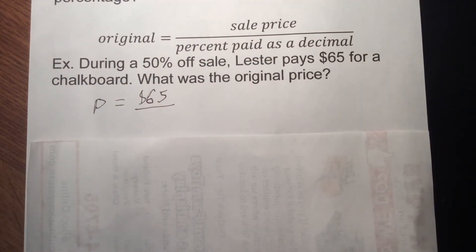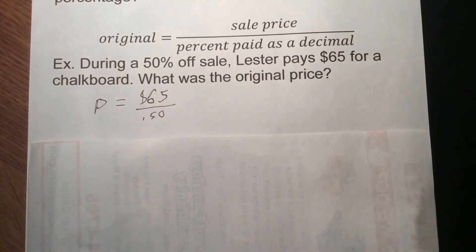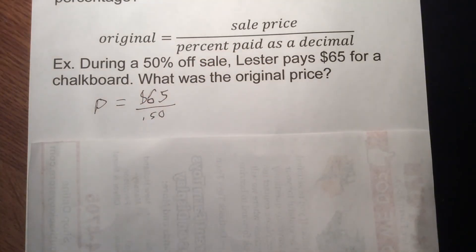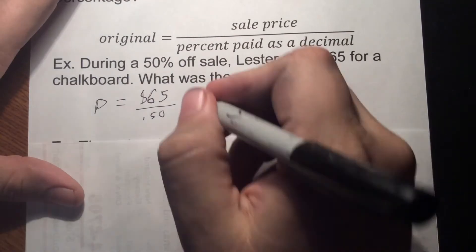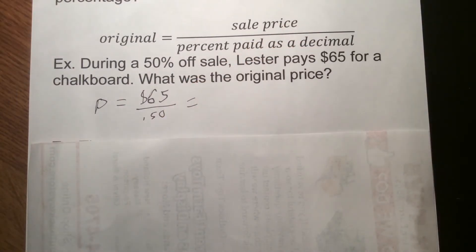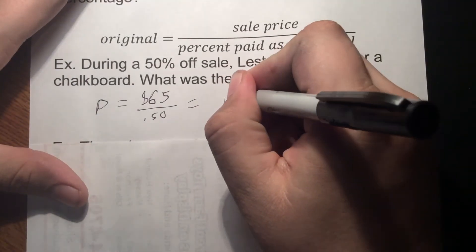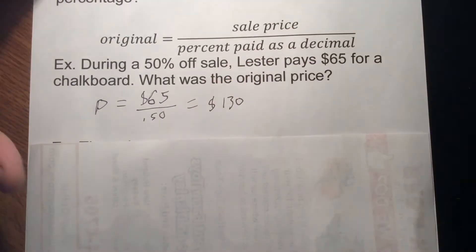Move the decimal two to the left: 50% becomes 0.50. If you want to drop the zero, that's fine. If you divide it out — 65 divided by 0.5 — that's going to give us $130. And that was our original price.